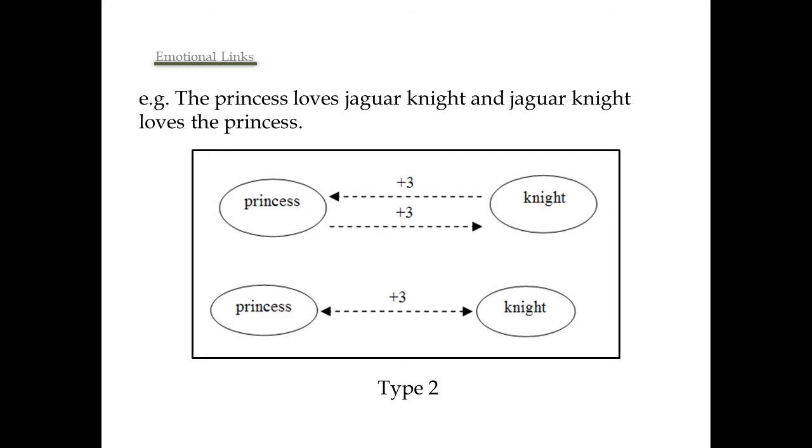This is an example of an emotional link of type 2. The princess loves jaguar knight and jaguar knight loves the princess. Type 2 is represented with a dashed arrow.